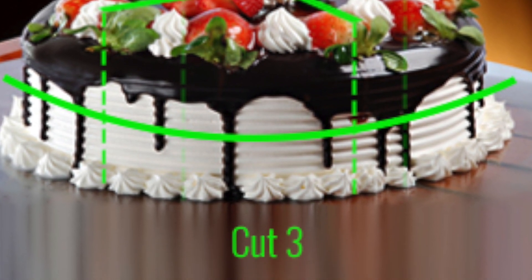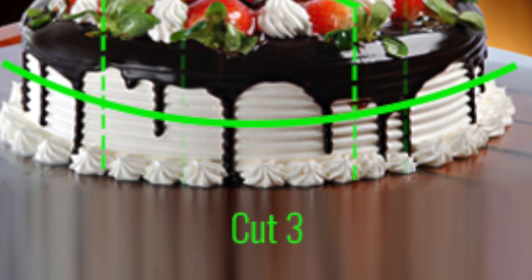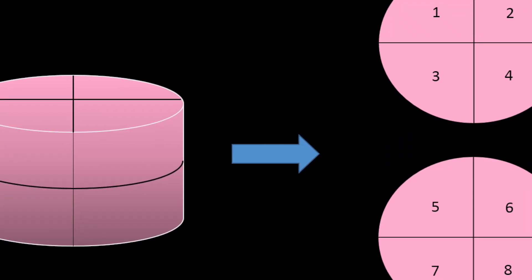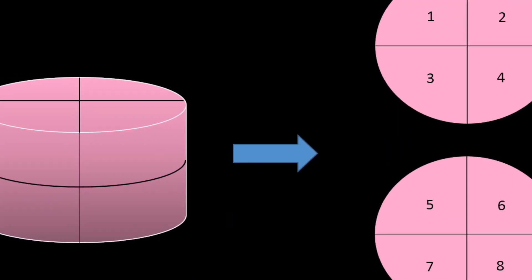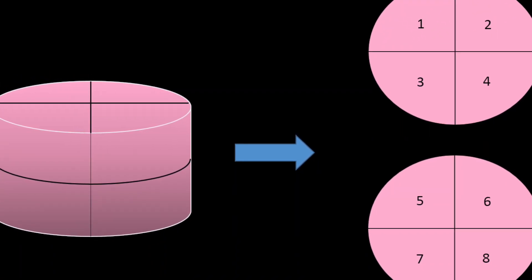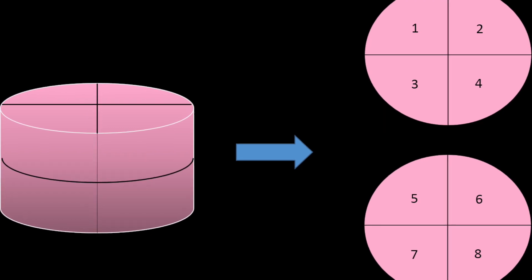Third cut I will do through the middle edge of the cake. Now in the bottom I have 4 pieces and in the top I have 4 pieces. Altogether I have totally 8 pieces.